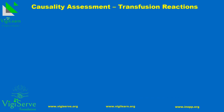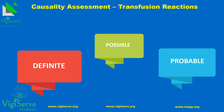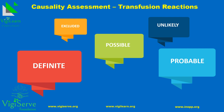By causality, we mean the related assessment between the transfusion and the adverse event. Causal relationship is considered to be definite or certain when there is conclusive evidence beyond reasonable doubt that the adverse event can be attributed to the transfusion. Probable or likely, when the evidence is clearly in favor of attributing the adverse event to the transfusion. Possible, when the evidence is indeterminate for attributing the adverse event to the transfusion or an alternate cause. Unlikely or doubtful, when the evidence is clearly in favor of attributing the adverse event to causes other than the transfusion. Excluded, when there is conclusive evidence beyond reasonable doubt that the adverse event can be attributed to causes other than the transfusion.